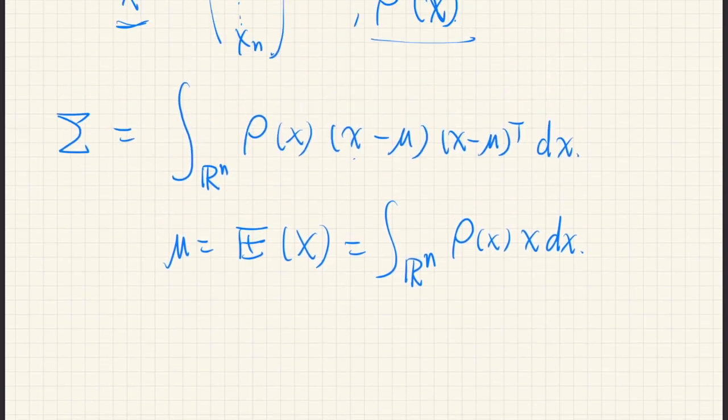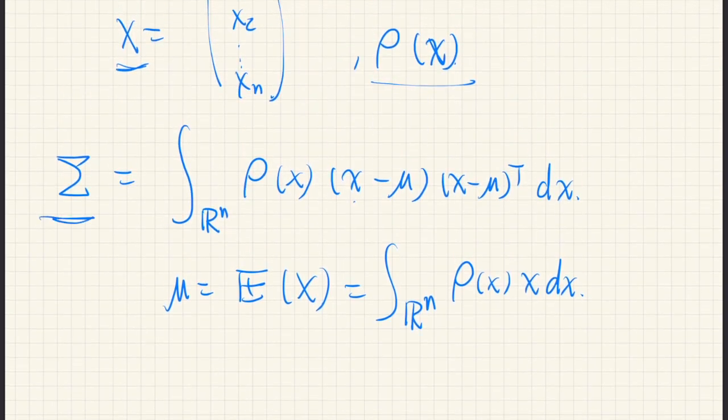And as you can see, this is a matrix, because this is an n-dimensional column vector, and this is an n-dimensional row vector. So if we multiply them, this is an n-by-n matrix.